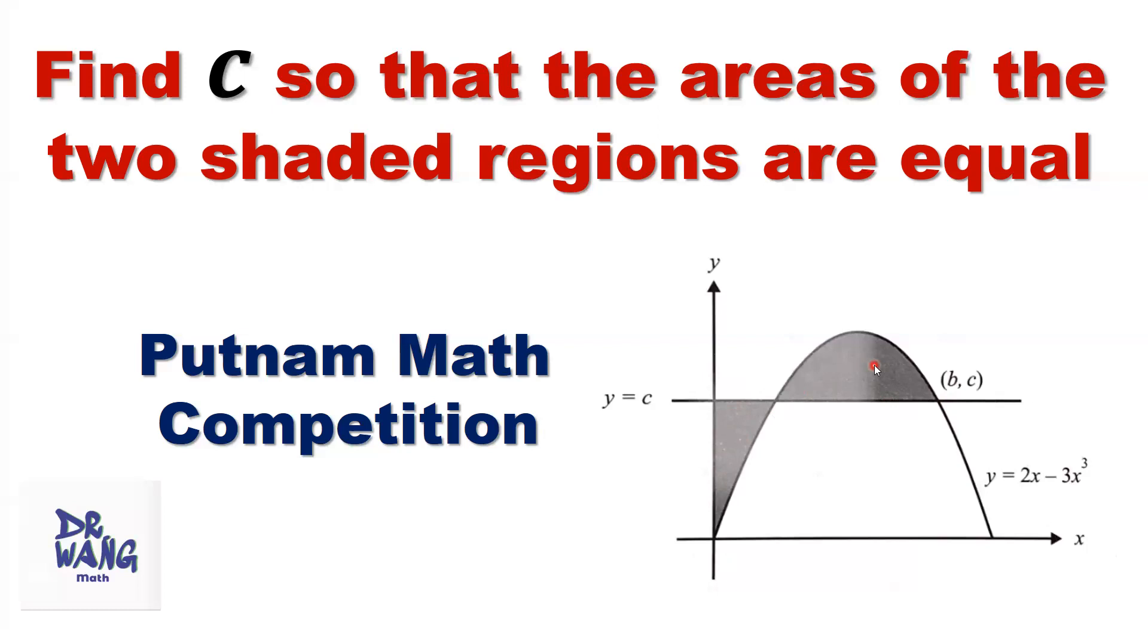Here is the question. Find the c value such that the areas of the two shaded regions are equal. This area equals this area. What is the c value?